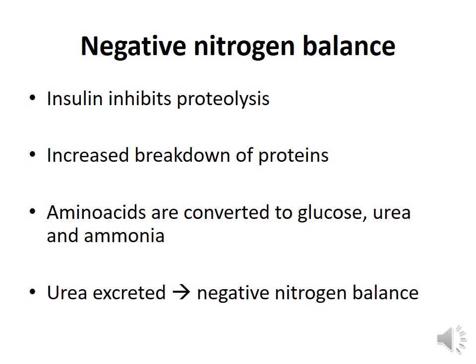Insulin is basically an anabolic hormone. In its absence there is proteolysis — breakdown of muscle proteins — and amino acids are released, which get converted into glucose, urea, and ammonia in the liver. This urea is excreted, giving rise to what is called a negative nitrogen balance.